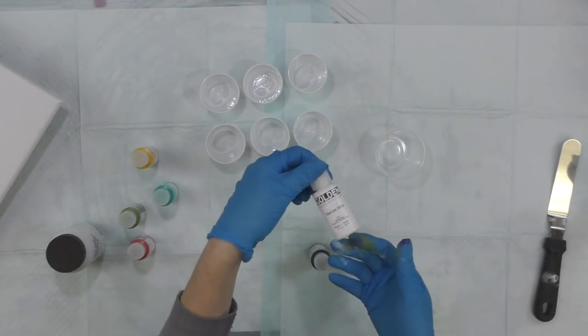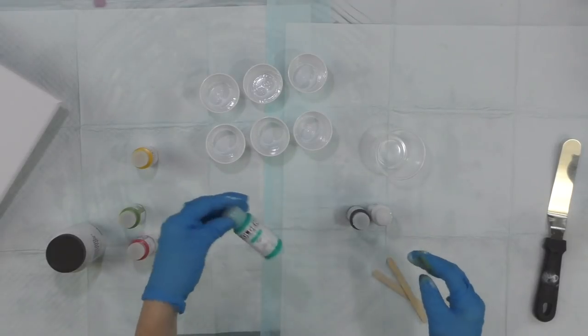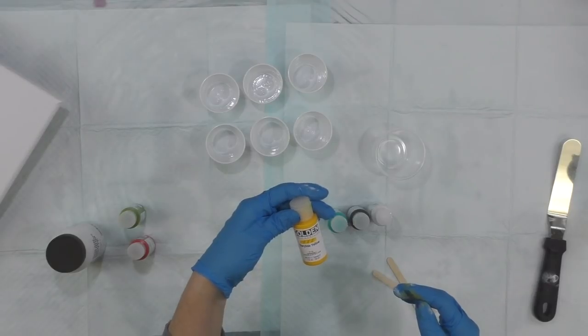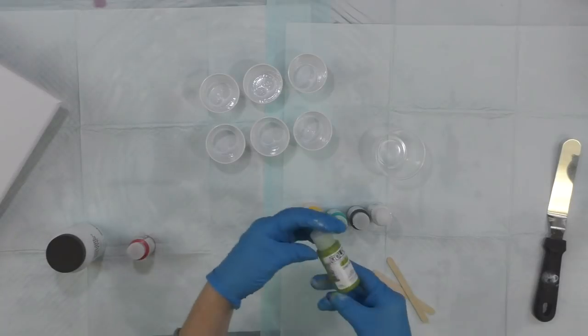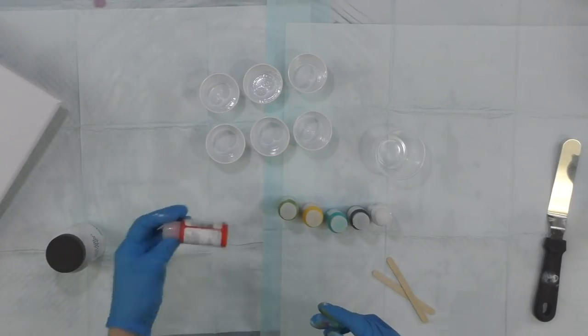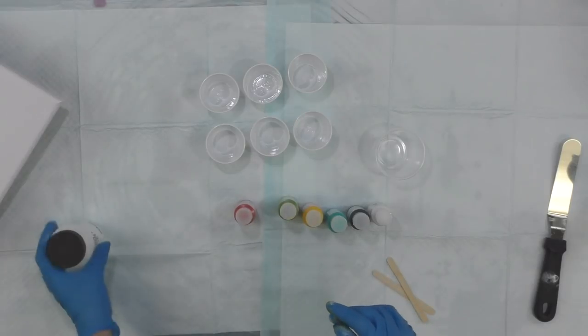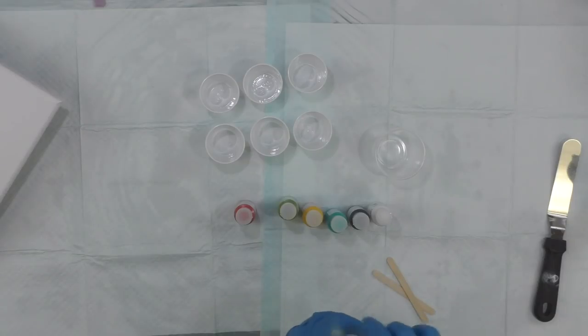So I'm using titanium white, Prussian blue hue, teal, diarylite yellow (that's a hard one to say), green gold, naphthol red light, and I'm going to use the pouring medium in matte finish.